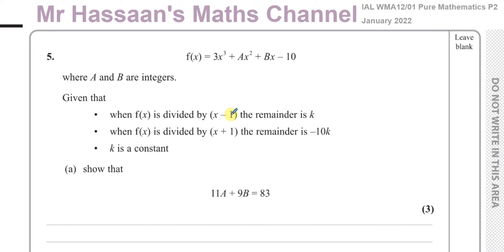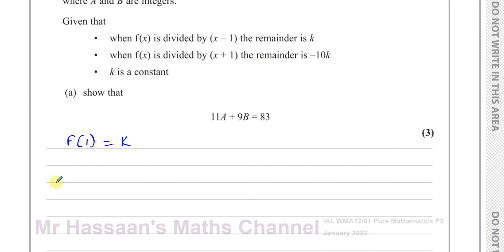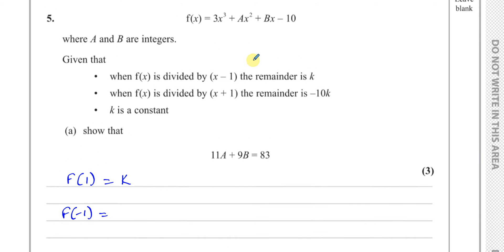When f(x) is divided by x minus 1, the remainder is found by substituting whatever makes that bracket become 0 into the function. So substituting 1 gives a remainder of k. And substituting whatever makes x plus 1 equal 0 — that is, x equals negative 1 — into the same function gives a remainder of negative 10k.